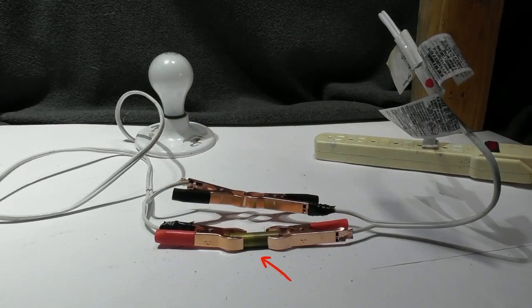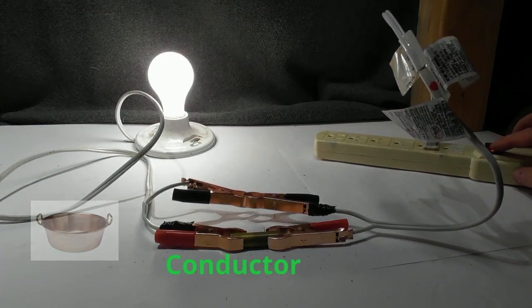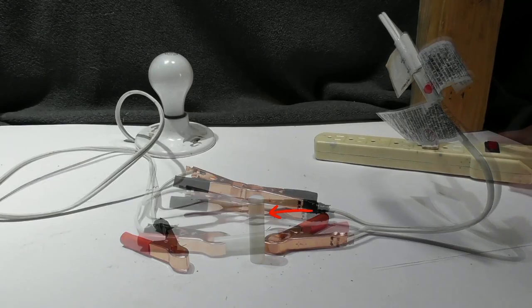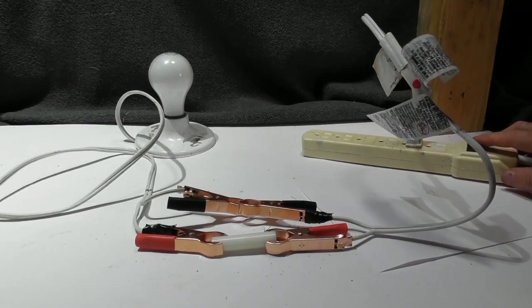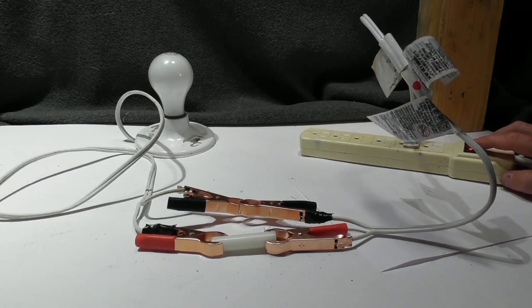Up first, we have copper. Hook it up and yes, it's a conductor. How about this piece of plastic? Flip the switch. Nothing happens. It is going to be an insulator.